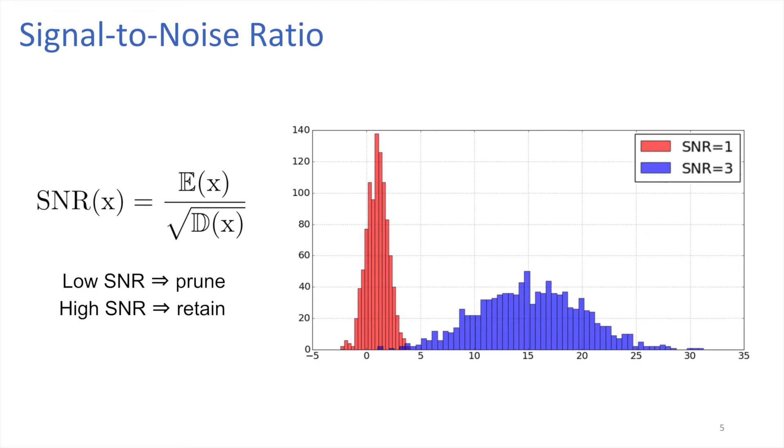After training, we can calculate the signal-to-noise ratio for the noisy variables. It can be used as a measure of importance of the corresponding neurons or filters. If a neuron has low signal-to-noise ratio, it does not carry any information and can be removed. If the signal-to-noise ratio is high, the neuron should be retained.